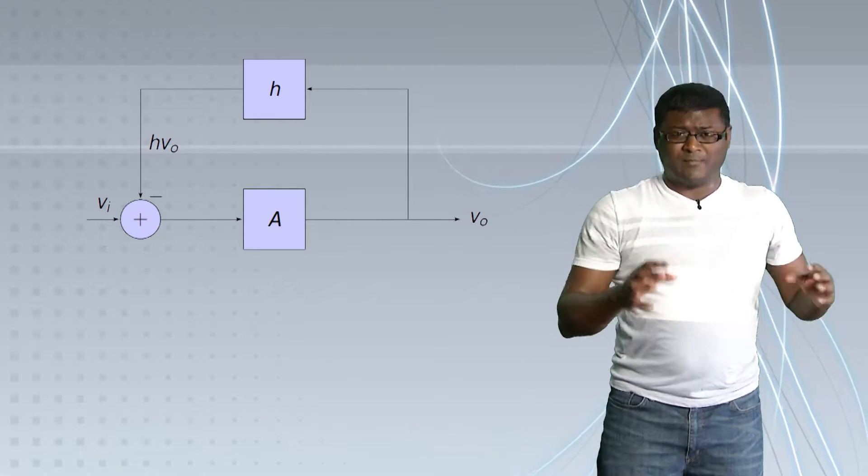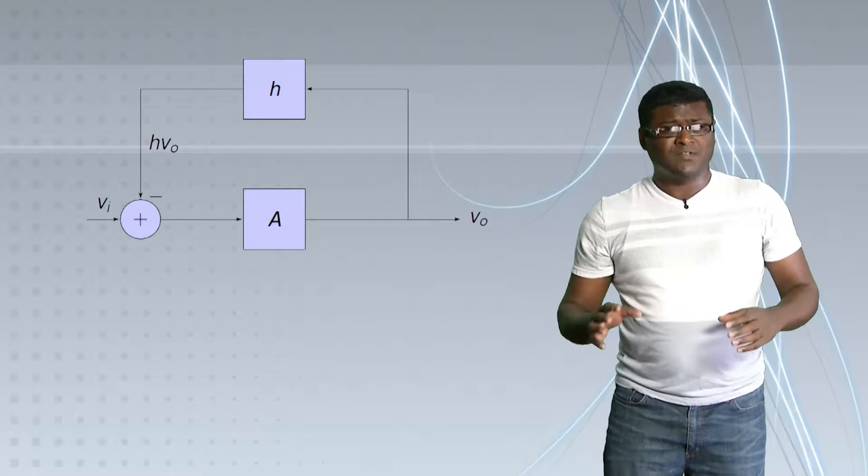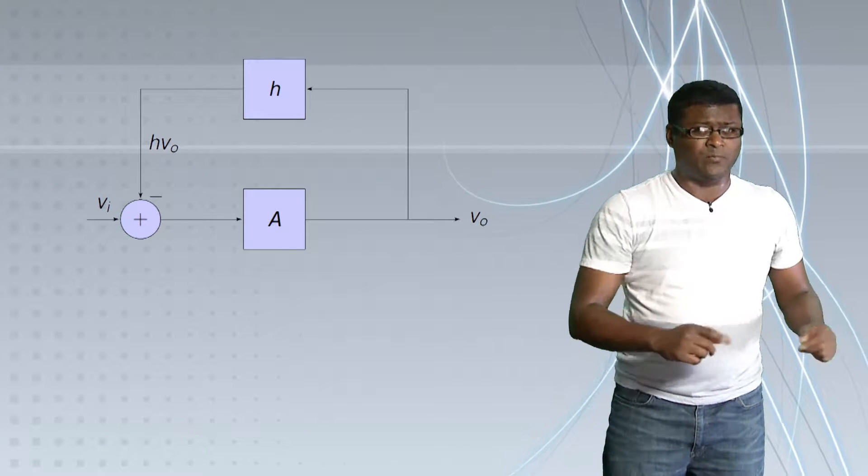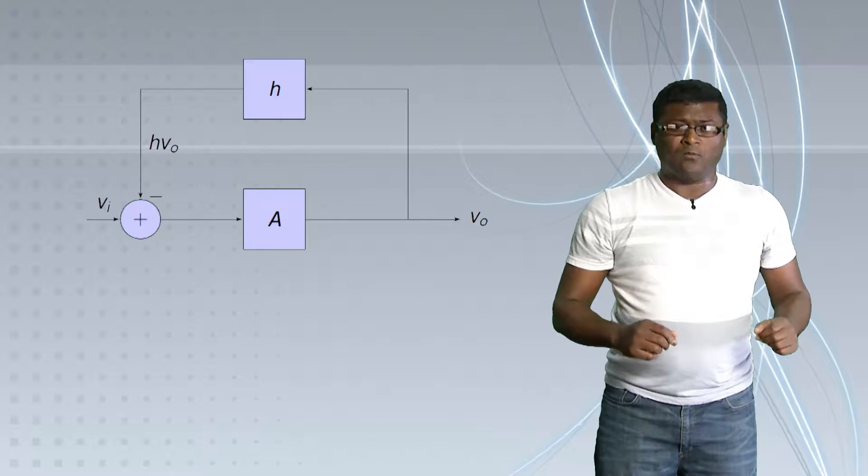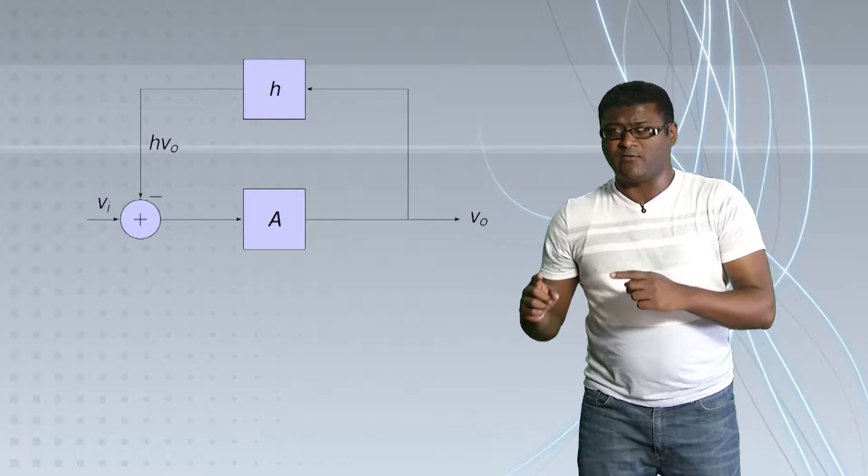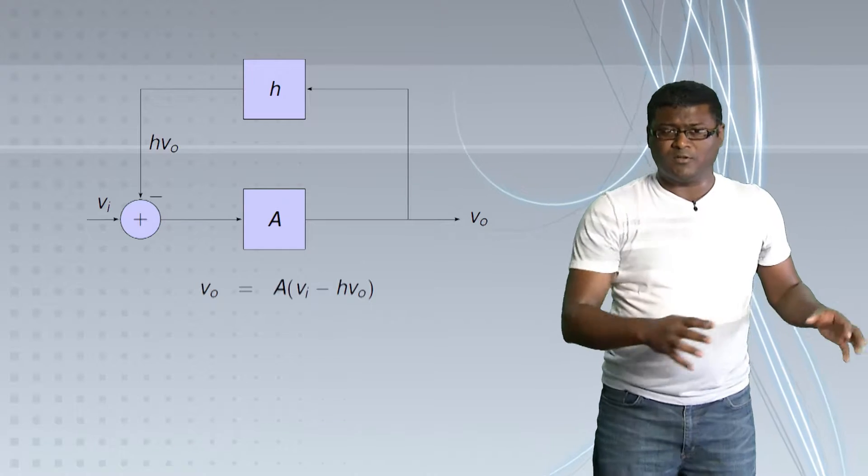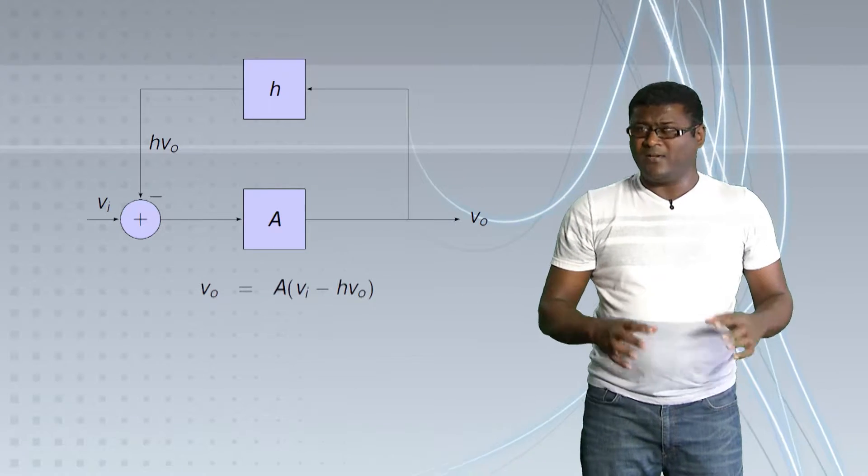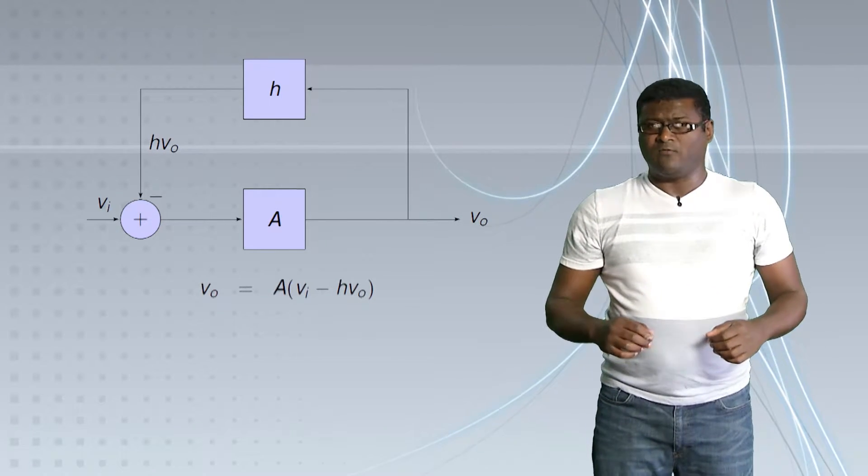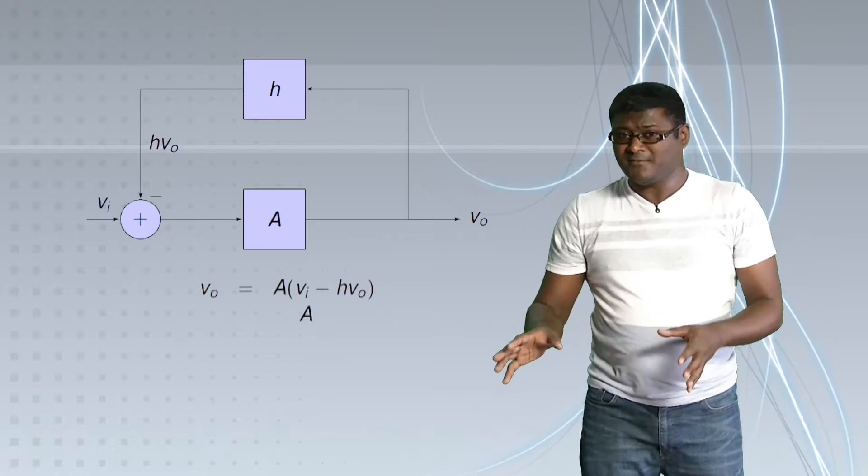and then I'm feeding that to the negative input. Now, you can see the output is given by this formula in terms of your input voltages. Now, let's look at this expression. We can simplify this to get this.